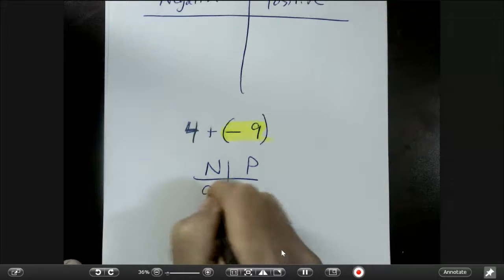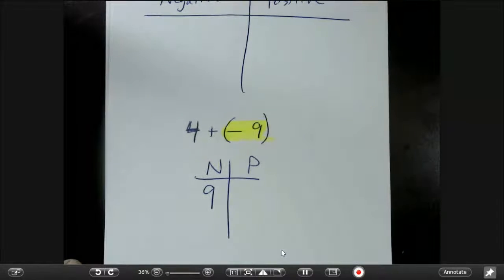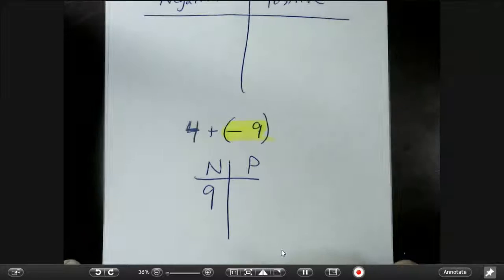So we're just going to put 9 for negative. We're not going to put negative 9. It's just the negative team scored 9 points.